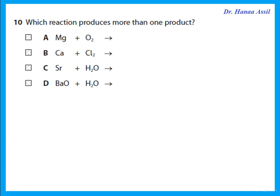Which reaction produces more than one product? Magnesium plus oxygen gives magnesium oxide only. Calcium plus chlorine gives calcium chloride only. Strontium reacts with cold water — it's a reactive metal — to form strontium hydroxide plus hydrogen, so this produces more than one product. Barium oxide plus water forms barium hydroxide only.